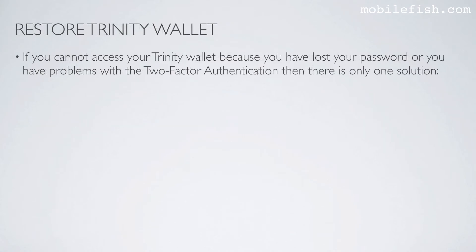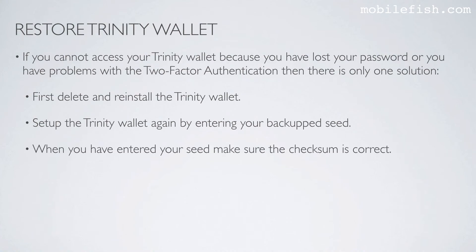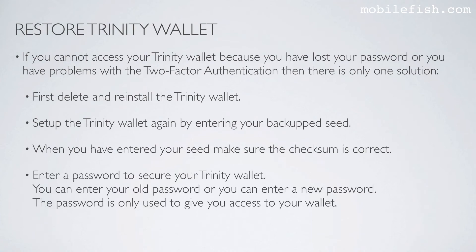If you cannot access your Trinity Wallet because you have lost your password or have problems with two-factor authentication, there is only one solution. First, delete and reinstall the Trinity Wallet. Set up the Trinity Wallet again by entering your backup seed. When you have entered your seed, make sure the checksum is correct. Enter a password to secure your Trinity Wallet — you can enter your old password or a new one. The password is only used to give you access to your wallet. Now your Trinity Wallet is set up and ready to use.